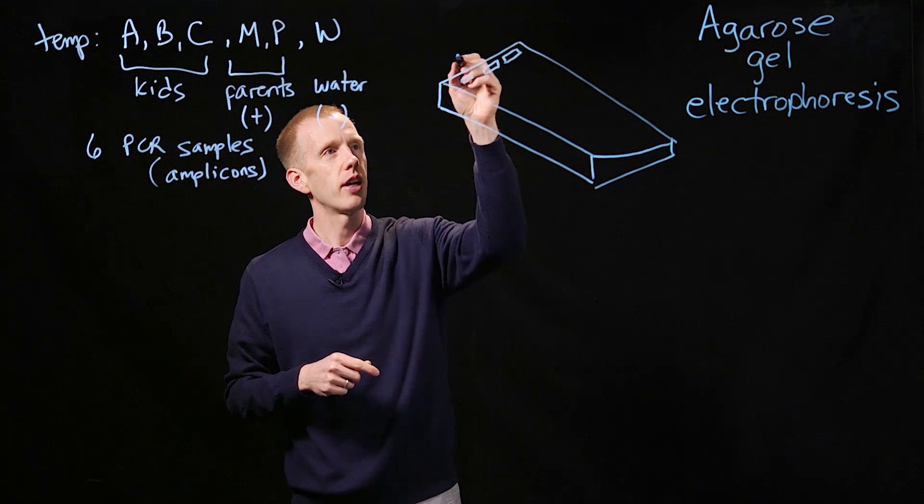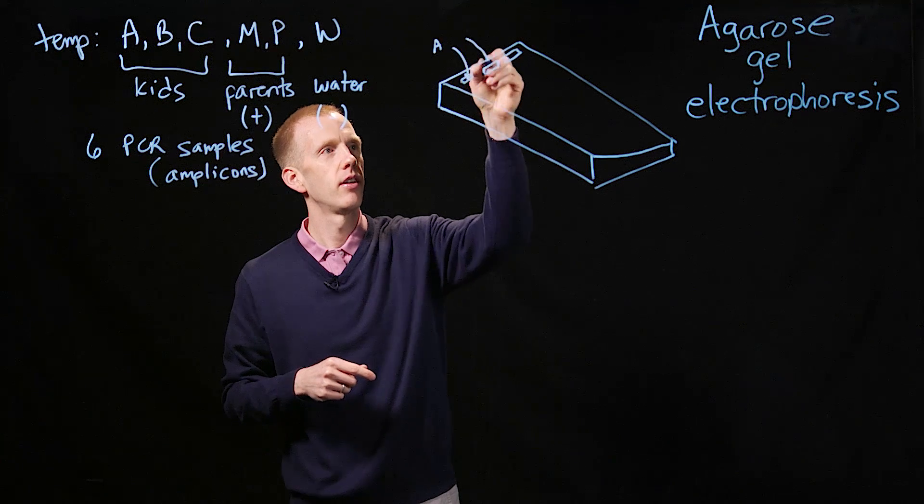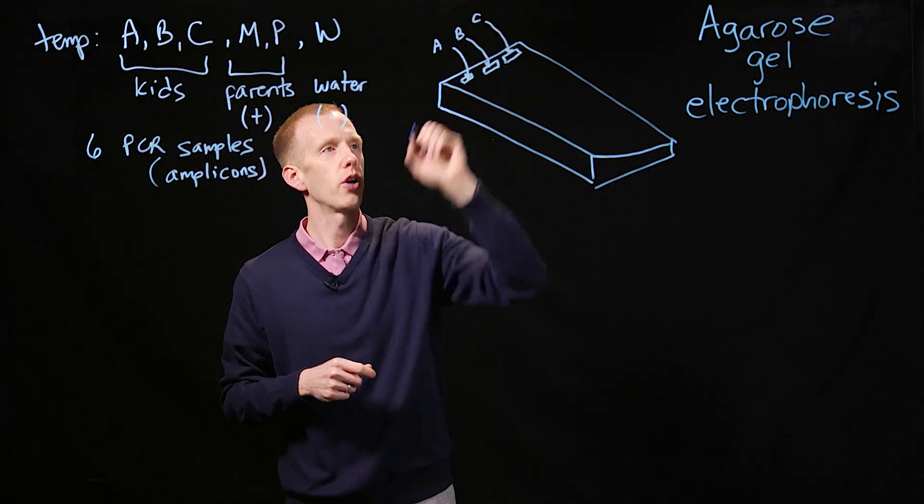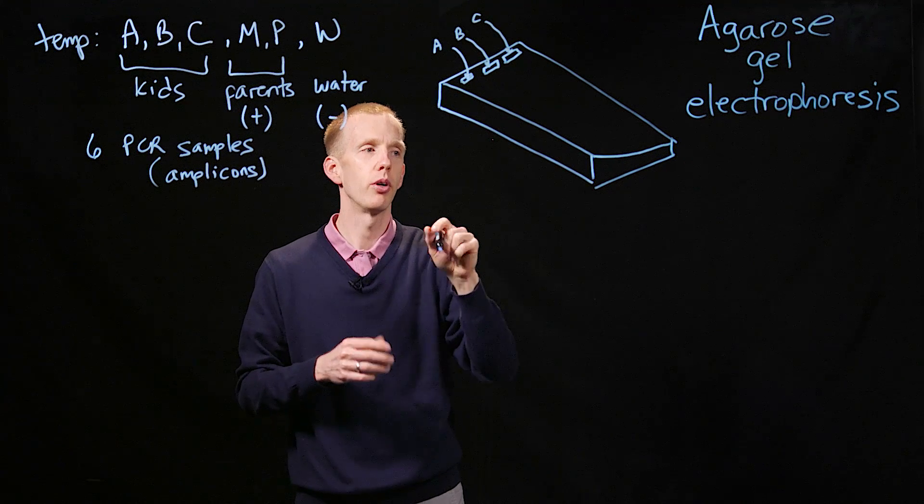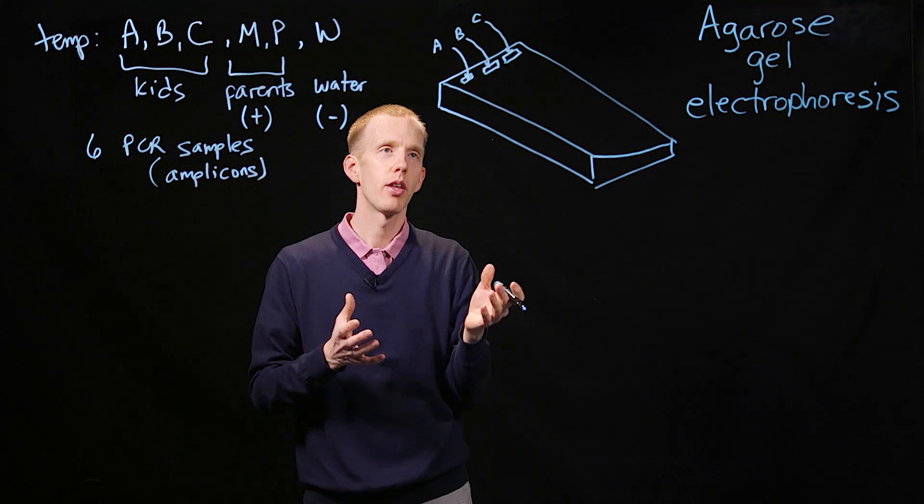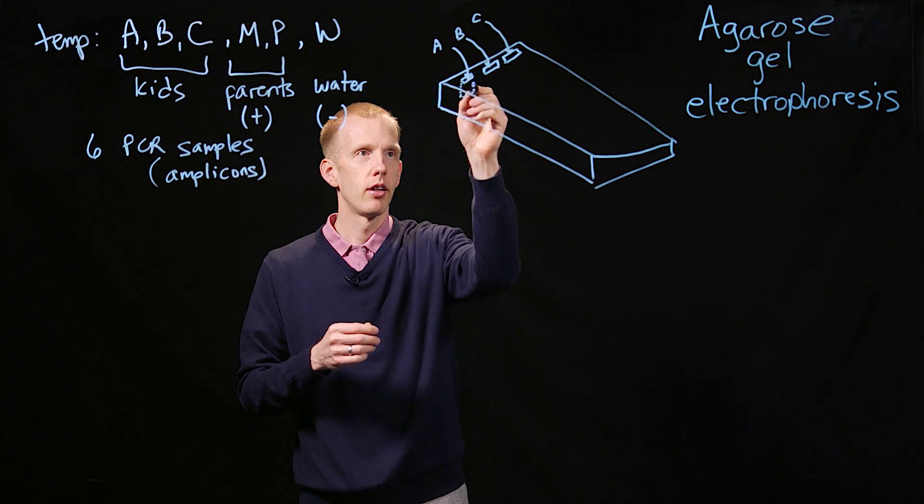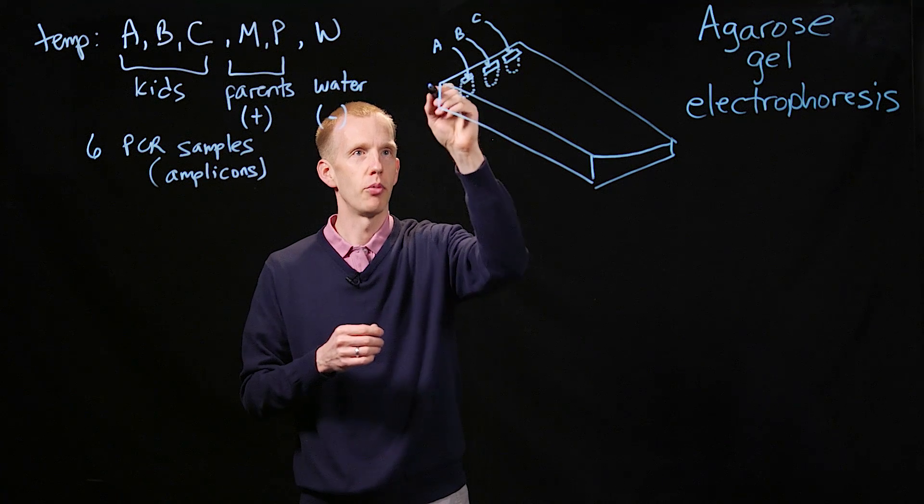And so what a scientist will do is they'll add, say, sample A, sample B, and sample C of our PCR amplicons into this gel. And those will just be floating there, in liquid, in this gel, down here, about in the middle of the gel, from top to bottom.